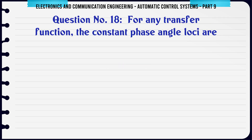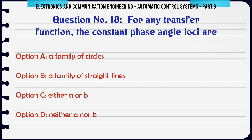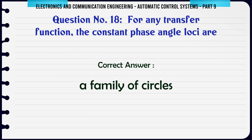For any transfer function, the constant phase angle loci are: A. A family of circles, B. A family of straight lines, C. Either A or B, D. Neither A nor B. The correct answer is: A family of circles.